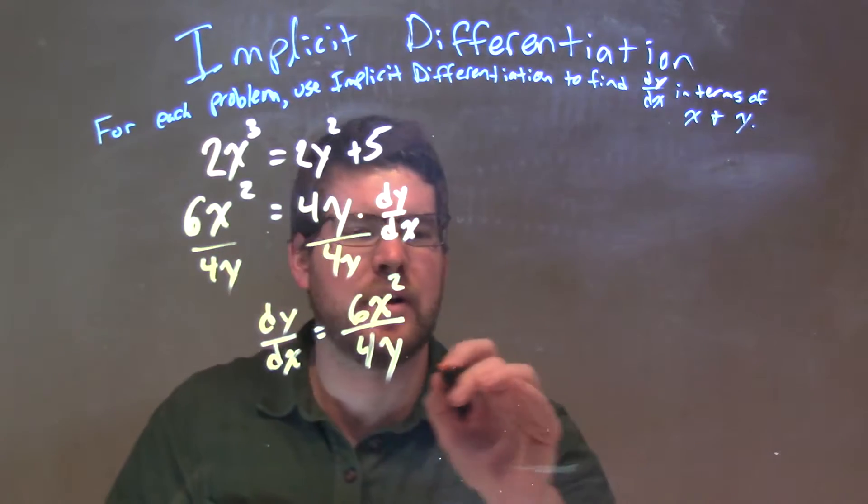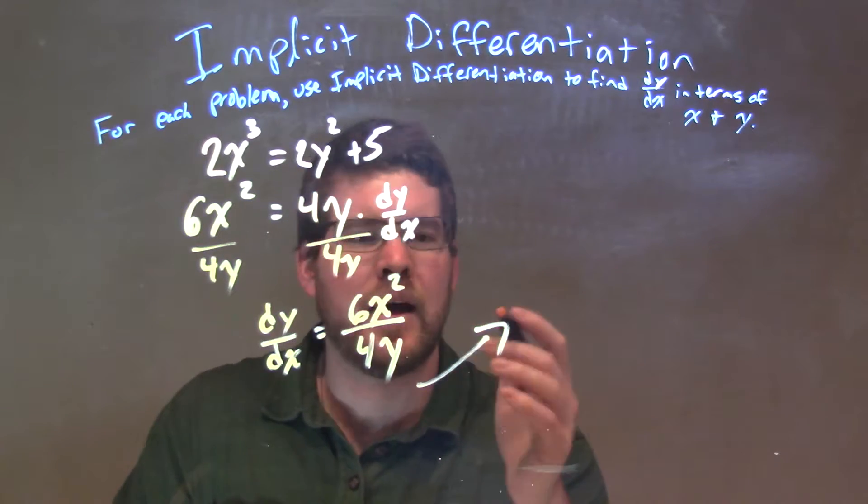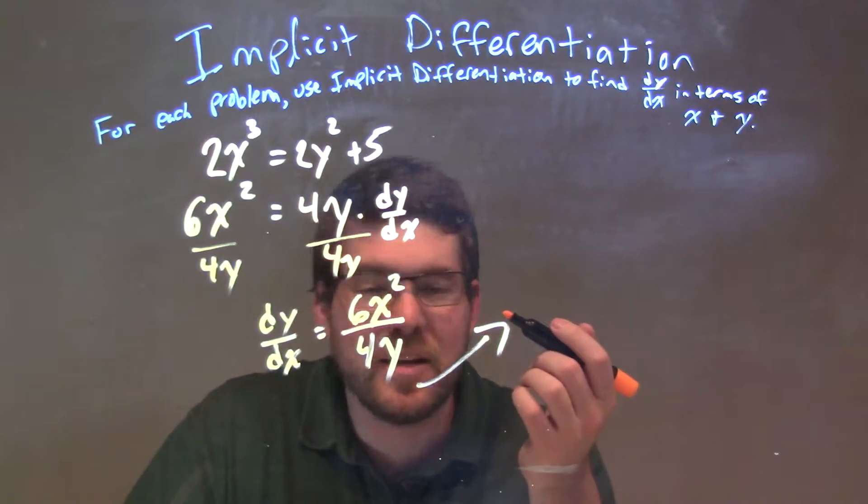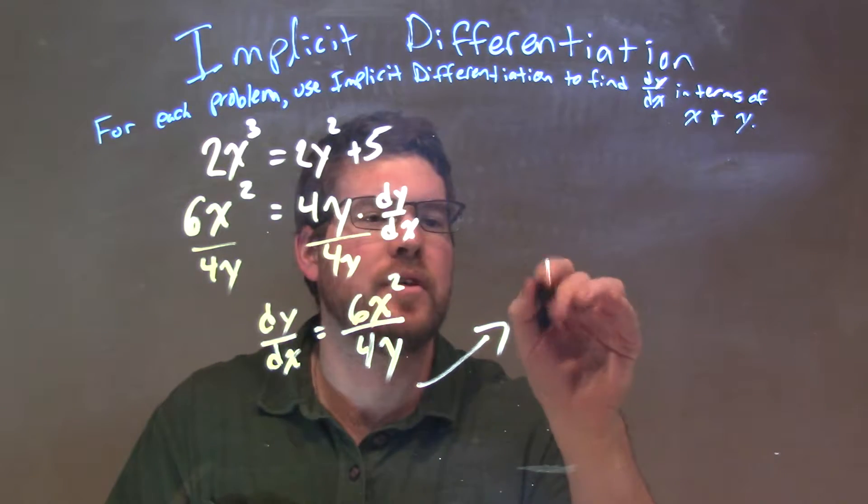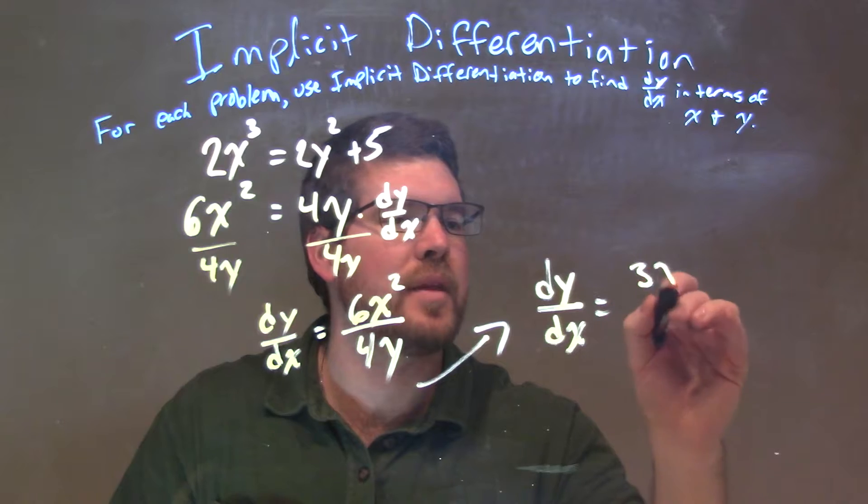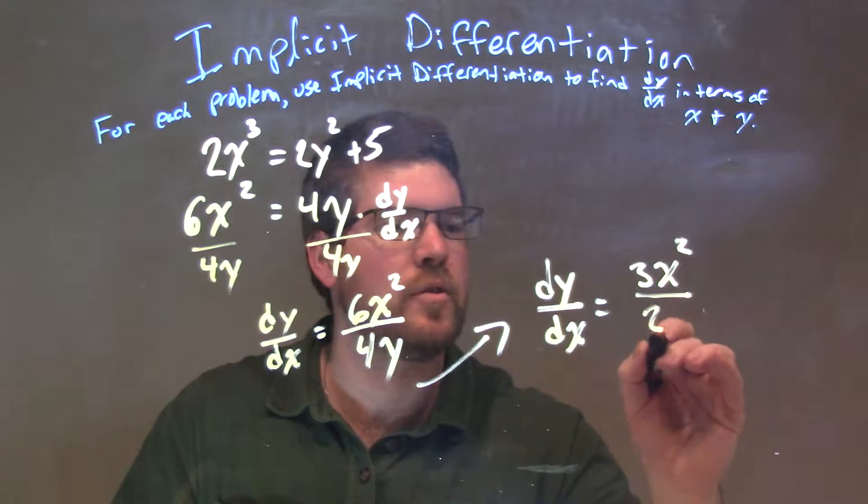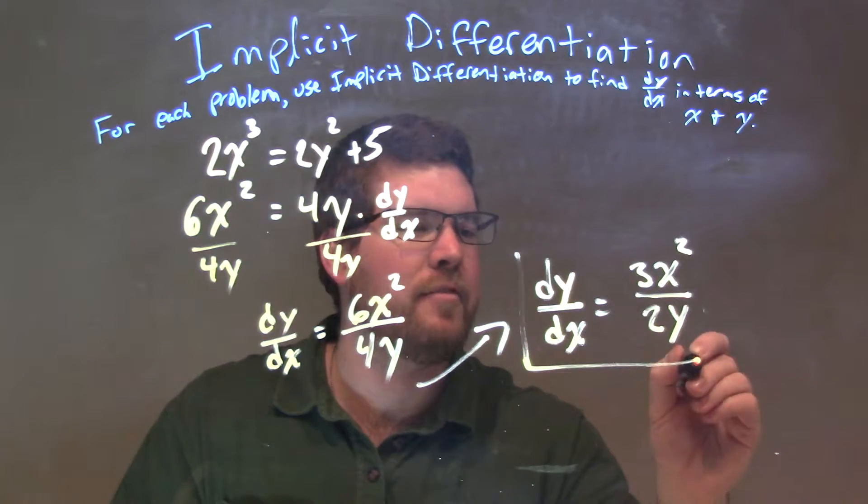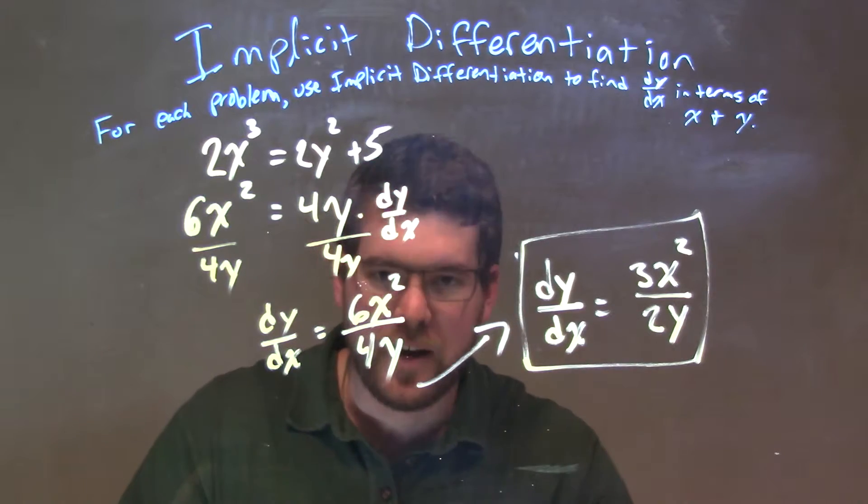And so I have now 6x² over 4y. Now we can easily simplify that. I'll put it right up here. 6 over 4 is really 3 over 2, so we have dy/dx is equal to 3x² over 2y. And there we have our final answer.